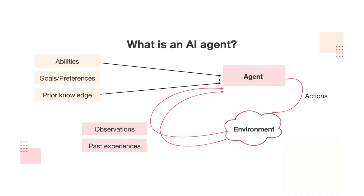An intelligent agent consists of three primary components: perception, decision-making, and action. Through perception, the agent collects data from its environment, such as visual input in autonomous vehicles or speech in virtual assistants. Next is the decision-making process, where the agent evaluates its options using algorithms or predefined rules to choose the most appropriate action.